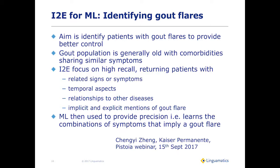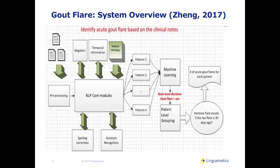Machine learning was then used to provide precision — taking the set of patients with suitable signs and symptoms and filtering them down to a better set. I2E was used as the NLP core module, dealing with negation, pulling in different ontologies, and producing a set of features. Those features were then fed into the machine learning model, which decided whether the patient was likely to have a gout flare or not.